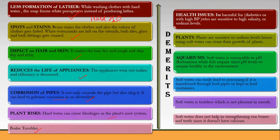Plants are also at risk from hard water, as it can cause blockage in the plant's root system. There are also boiler troubles with hard water. Moving to the demerits of soft water: when water is treated through processes like zeolite, the sodium level rises, and this is especially harmful for people sensitive to sodium, such as diabetics or those with high blood pressure. Plants are also sensitive to high sodium levels, so neutral or distilled water is generally best for their growth.